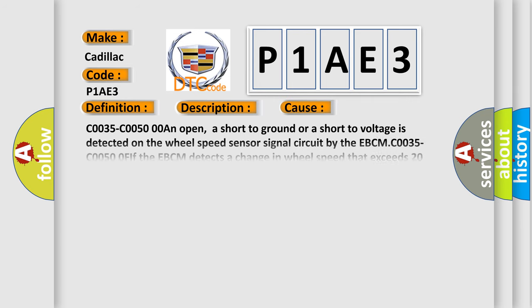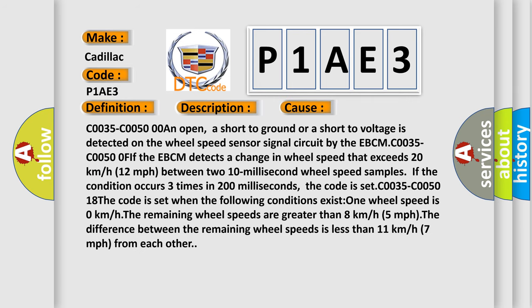This diagnostic error occurs most often in these cases. C0035-C00500: An open, a short to ground, or a short to voltage is detected on the wheel speed sensor signal circuit by the EBCM.